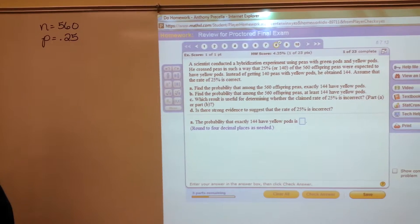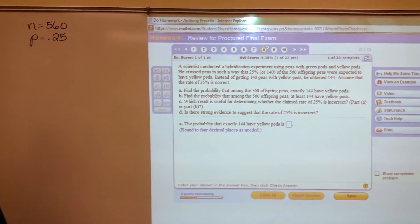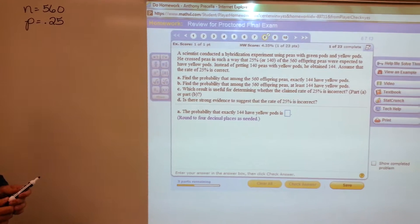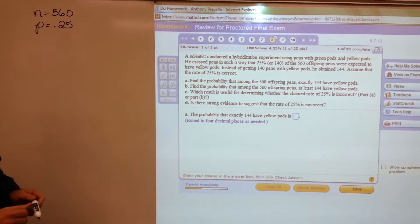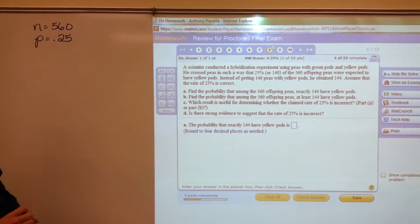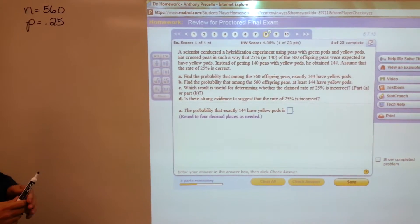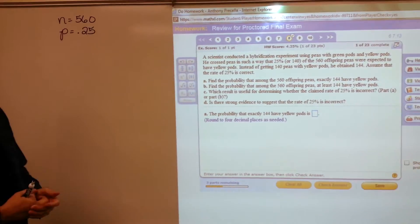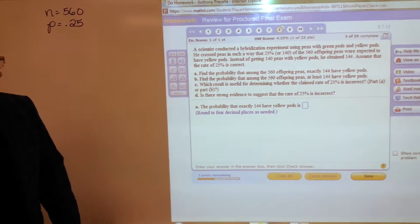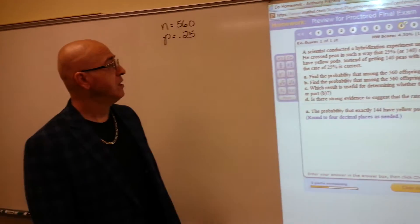We would need to use a normal distribution to approximate it, but I want to illustrate StatCrunch today and using StatCrunch's binomial feature, we should be able to punch it in and get this answer without having to approximate using the binomial.